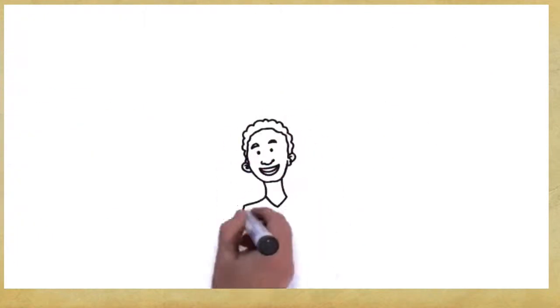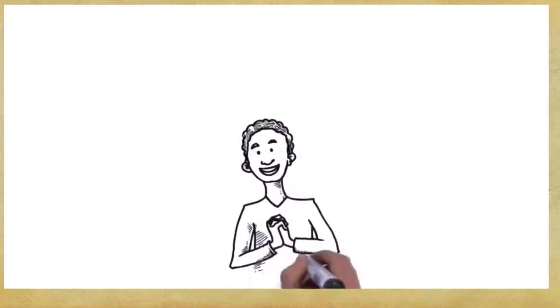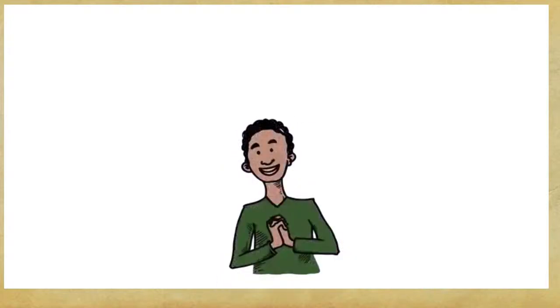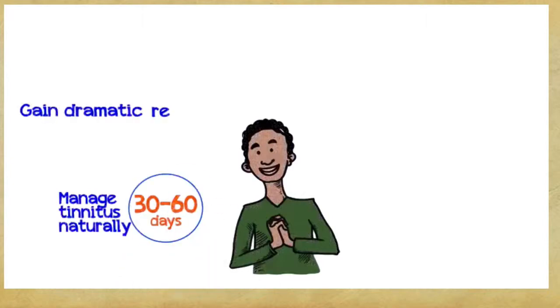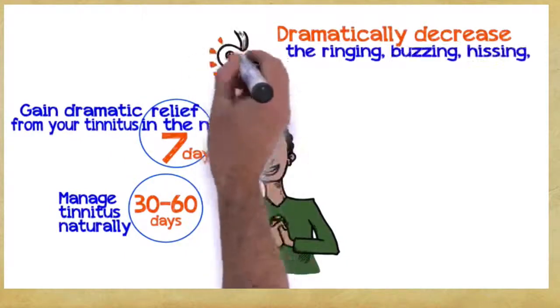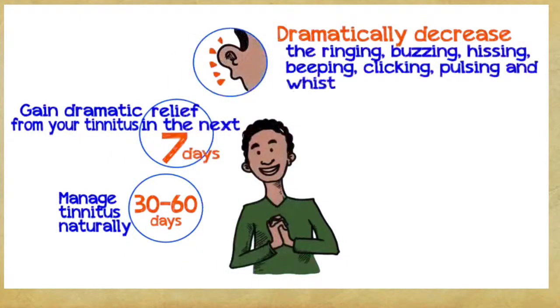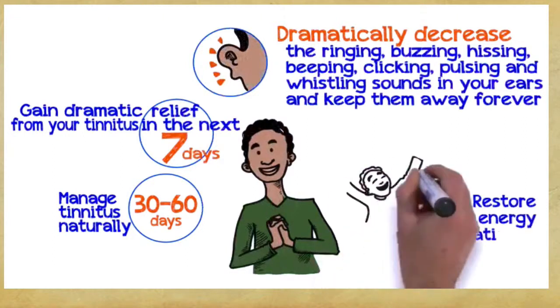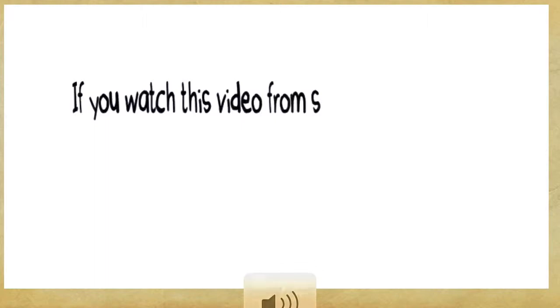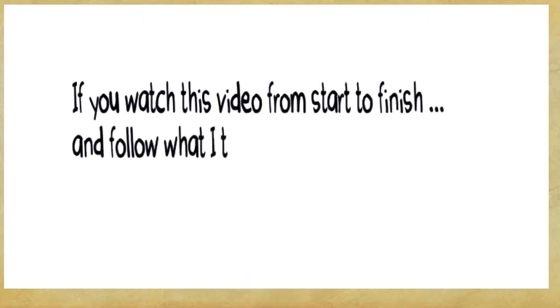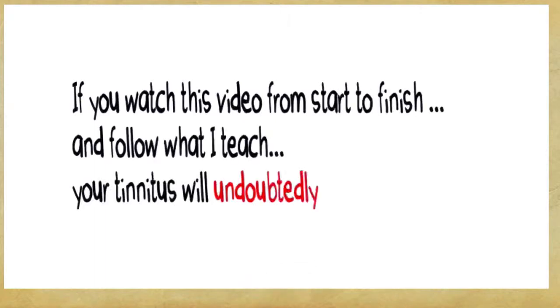What can you gain if you embrace these three principles? You can manage tinnitus naturally within 30 to 60 days, gain dramatic relief within the next seven days, dramatically decrease the ringing, buzzing, hissing, beeping, clicking, pulsing, and whistling sounds in your ears and keep them away forever. Restore your energy and dramatically improve the quality of your life, guaranteed. If you watch this video from start to finish and follow what I teach, your tinnitus will undoubtedly start to fade away.